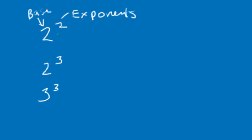So all this means is that you're going to think of how many times you're going to multiply this number 2 times itself.